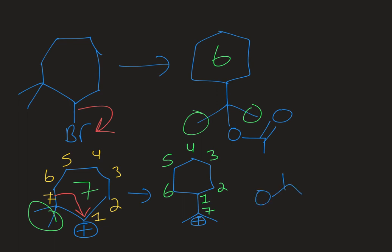Now I have a new carbocation and that can be attacked by my nucleophile to give me that unexpected product. My arrow starts at a lone pair on my oxygen nucleophile and it ends at the new carbocation center to give me my final product here.